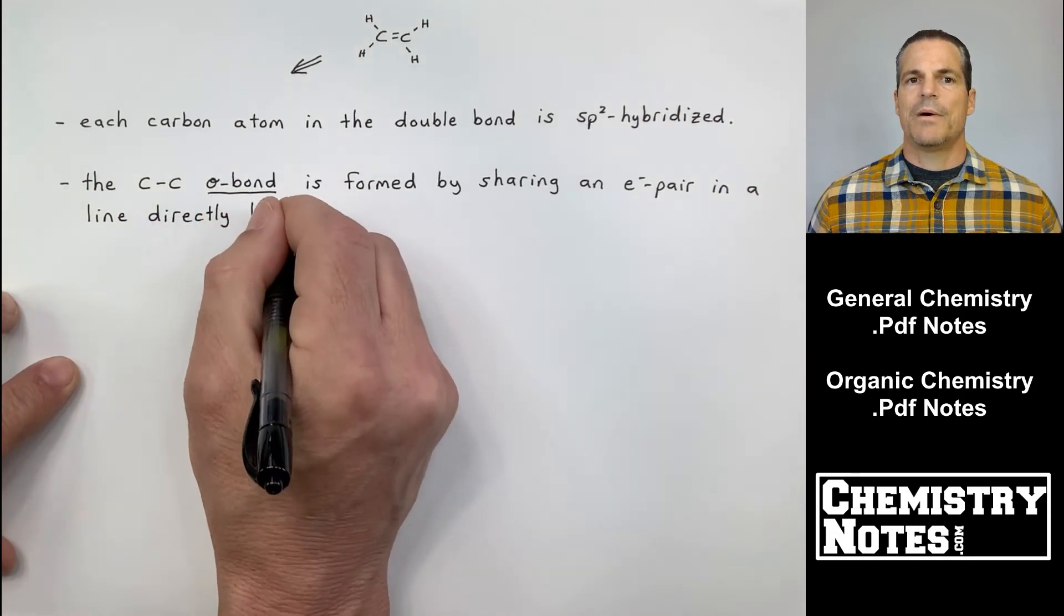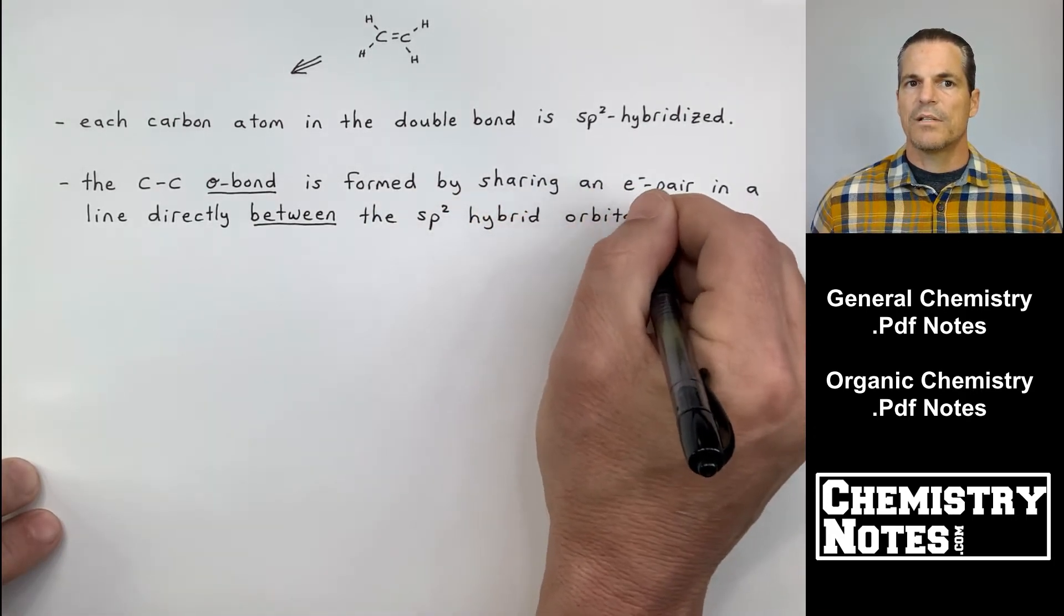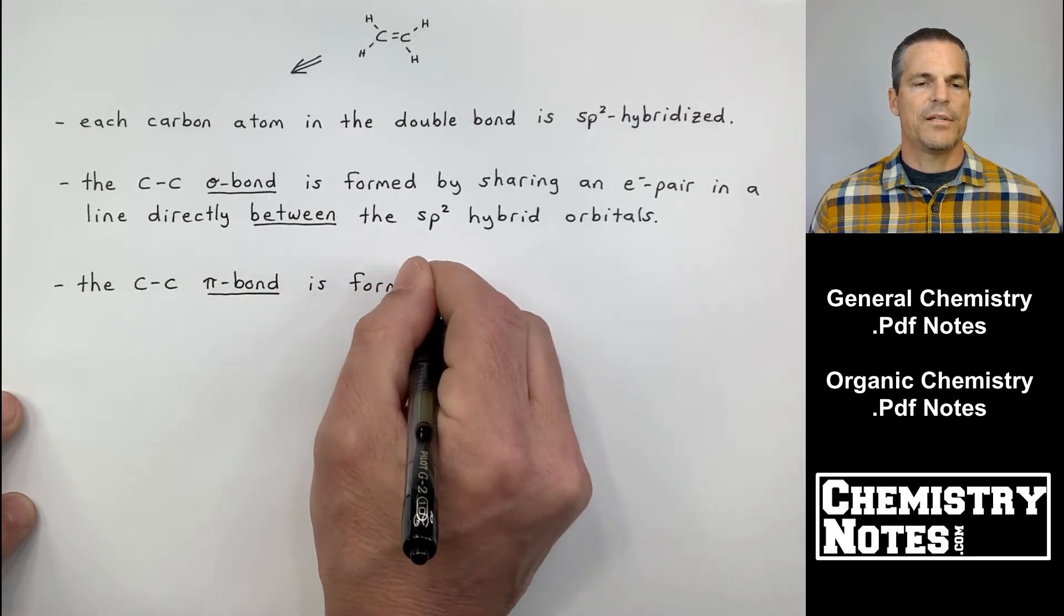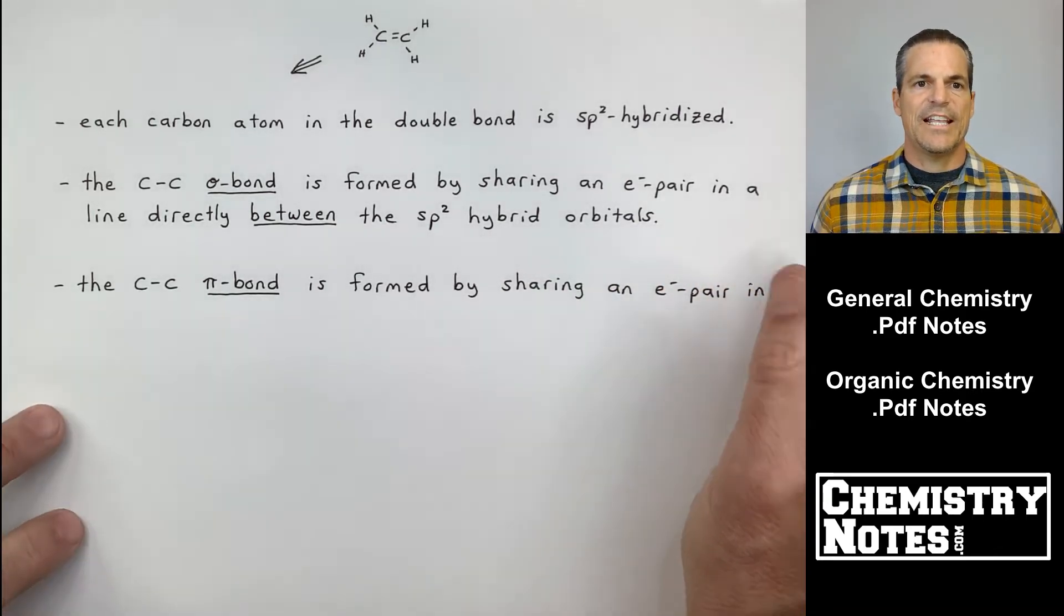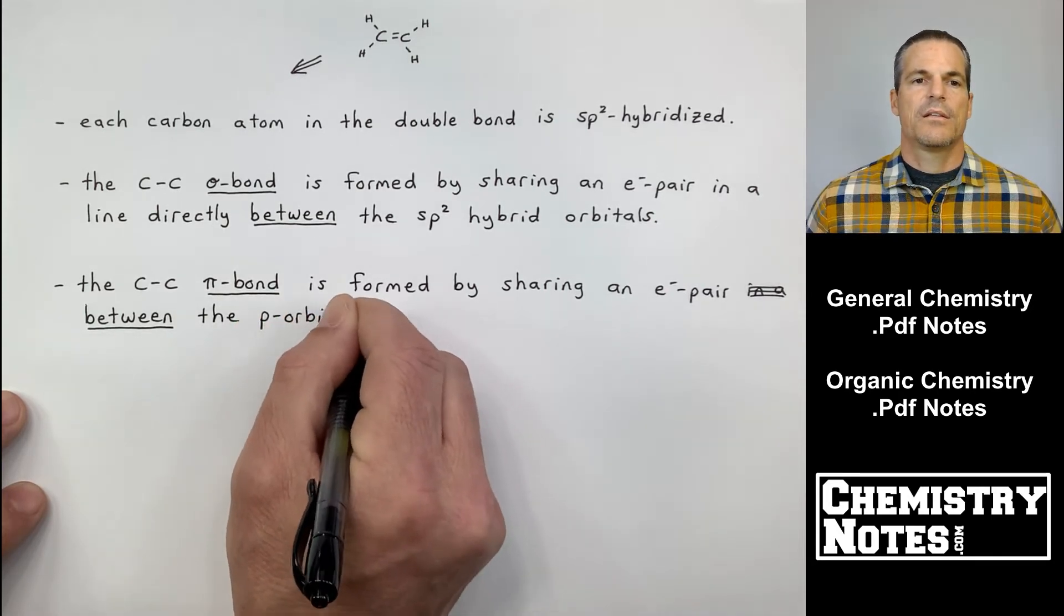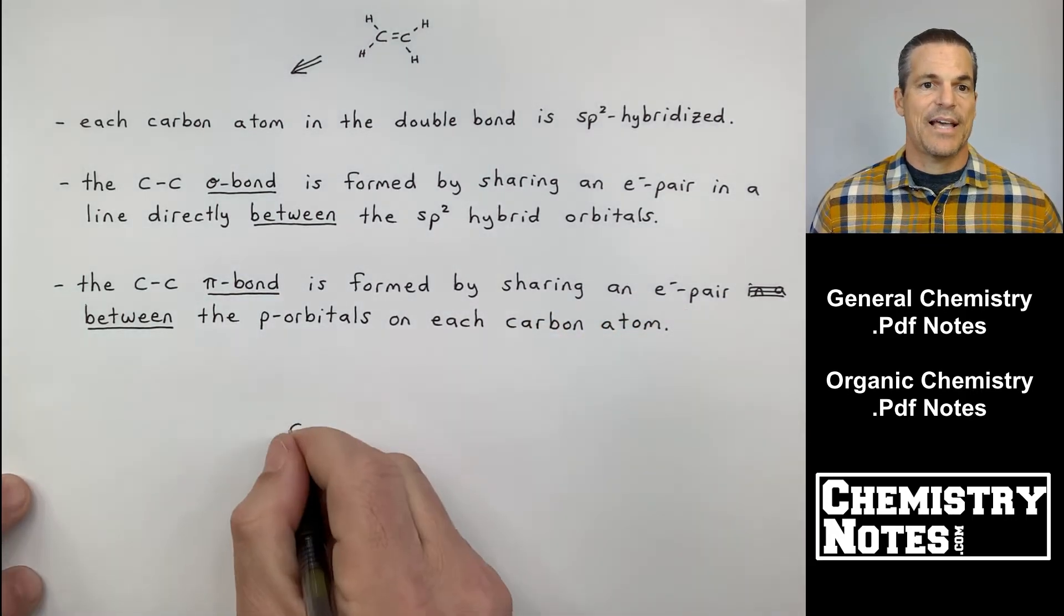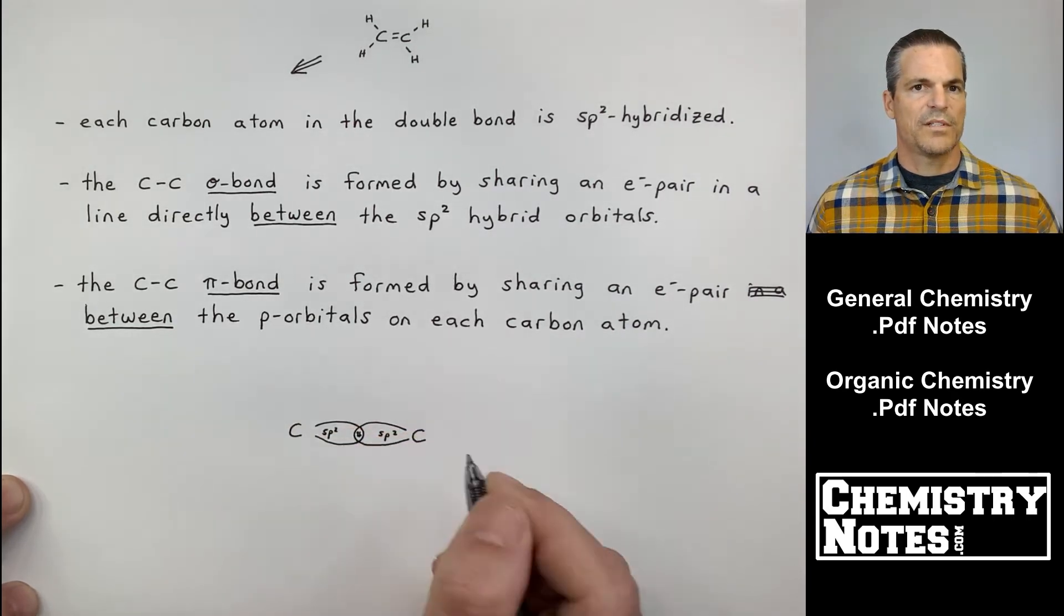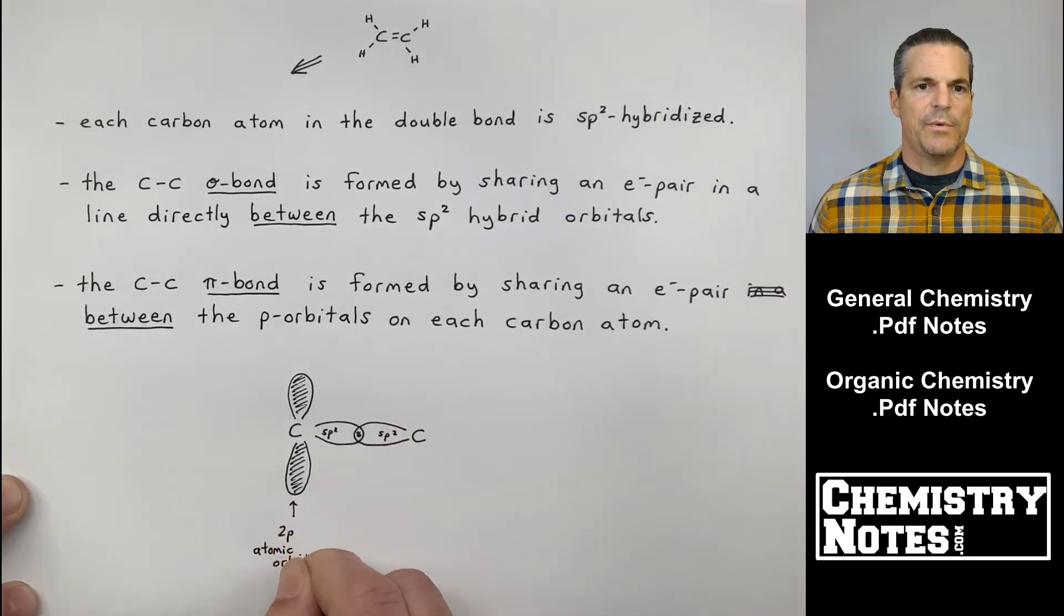So the carbon-carbon sigma bond, I'm starting to talk about the double bond with more specificity now. The carbon-carbon double bond, it's a collaboration of two different types of things. It's a sigma bond and a pi bond. So the second bullet point talks about sigma bonding. The carbon-carbon sigma bond is formed by sharing an electron pair in a line directly between the sp2 hybrid orbitals. So it's like an internuclear line. It's direct. The carbon-carbon pi bond is formed by sharing an electron pair between the p orbitals on each carbon atom. That is actually on a plane above and below an internuclear line.